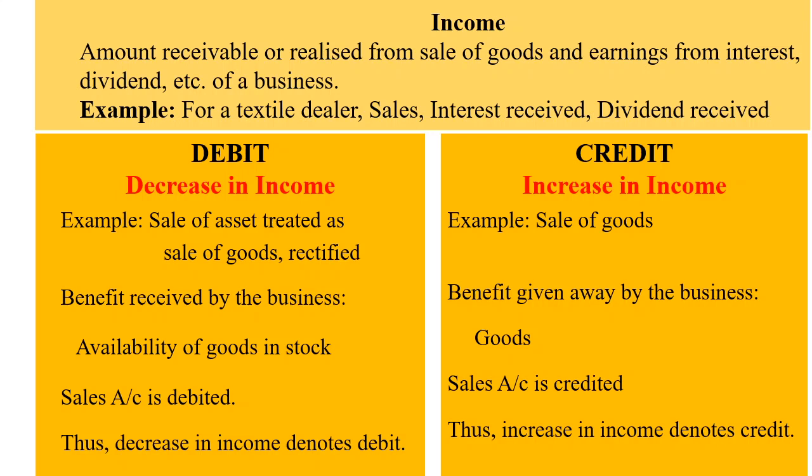Credit denotes increase in income. Example: sale of goods. The benefit given away by the business is goods, and so the sales account is credited. Thus, increase in income denotes credit.